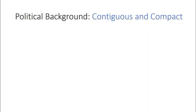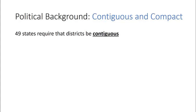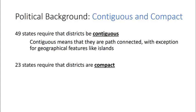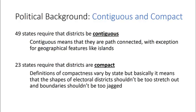The next two values are contiguity and compactness. 49 states require that districts be contiguous, meaning the districts are path-connected — with the exception of geographical features like islands — so you should be able to drive from one part of the district to every other part without separating the district into pieces. 23 states require that districts are compact. Definitions of compactness vary by state, but basically it means the shapes of electoral districts shouldn't be too stretched out and the boundaries shouldn't be too jagged. Our second video on electoral districting will focus entirely on this notion of compactness.